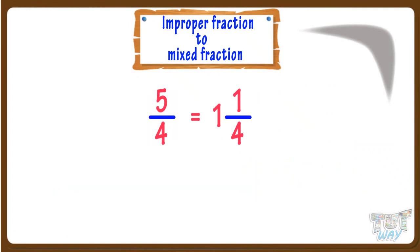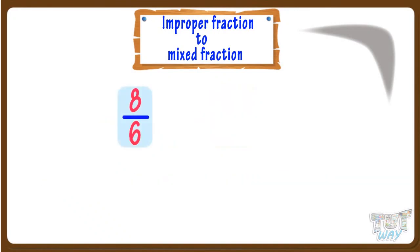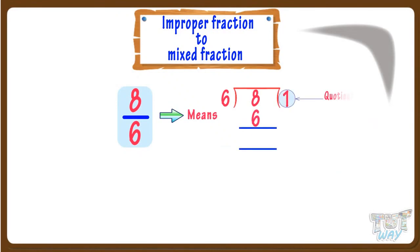Here, 5 by 4 was an improper fraction and we have converted it to a mixed fraction. Let's see more examples. The next fraction is 8 by 6. We have to convert 8 by 6 to a mixed fraction — divide the numerator by the denominator. Dividing 8 by 6, we get 1 as quotient and 2 as remainder.